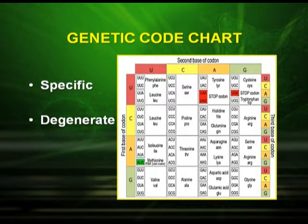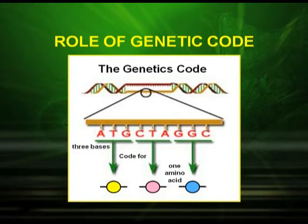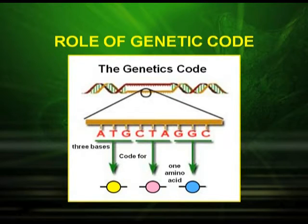The genetic code is very specific, and another important property is that it is degenerate — meaning one amino acid can be coded by more than one codon. The role of the genetic code is to code for amino acids. As seen in the picture, we read three bases like ATG, CTA, or GGC, and each set of three bases codes for a particular amino acid.